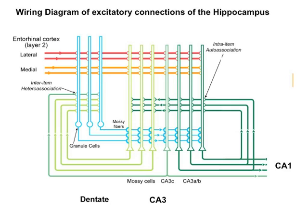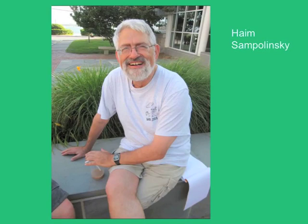This turns out to be relevant to another aspect of the architecture of the hippocampus. If you look at the green cells — especially the light green cells — you will see that they send their axons back to the dentate gyrus. What good could this be? This is where I developed some ideas, based on important foundational work done by Haim Sompolinsky.